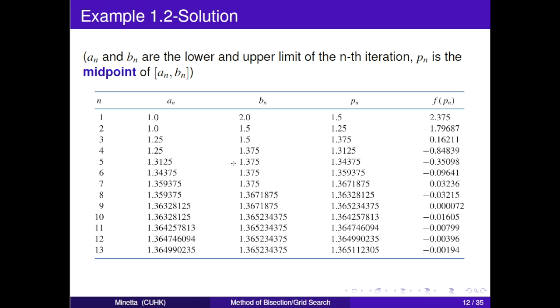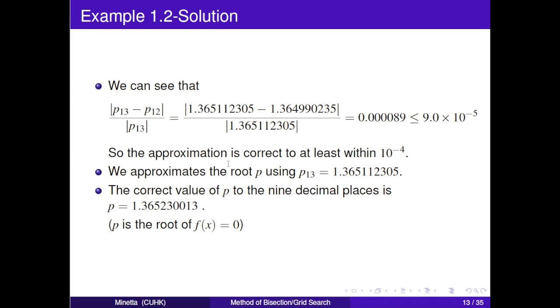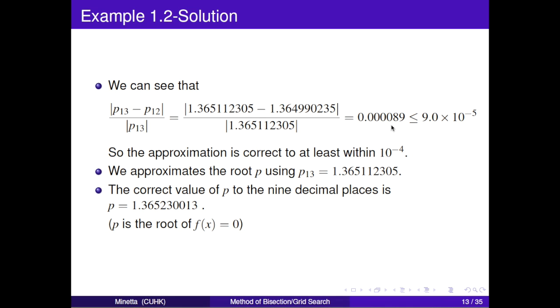This table shows the 13 iterations. Then we use stopping criteria to check it. We can see that this value is less than 10 to the power negative 4. So, the approximation is correct to exist within 10 to the power negative 4. Hence, we approximate the root p using this value. Actually, the correct value of p is this value. In other words, our method is correct.